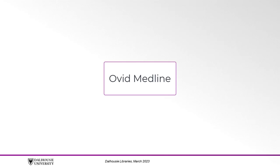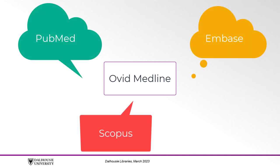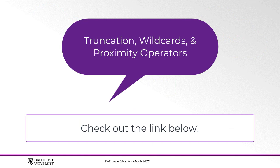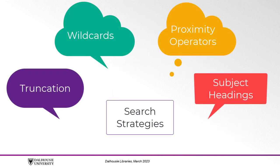You may be familiar with resources like PubMed, Embase, and Scopus. Medline content can also be found in those platforms, particularly PubMed, which is the public Medline search engine. However, in a comprehensive literature search, it may be best to search Medline through Ovid, to take advantage of some advanced search functions such as wildcards and proximity operators. Check out our video on truncation, wildcards, and proximity operators in the description below. In combination with searching other databases, these strategies will ensure more comprehensive retrieval of evidence related to your topic.